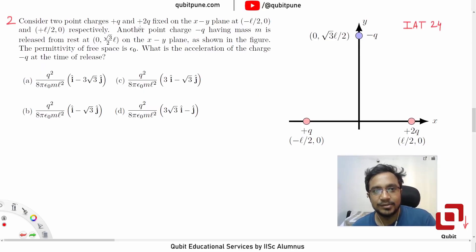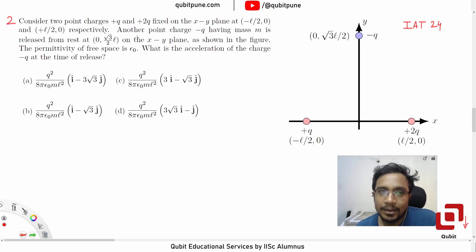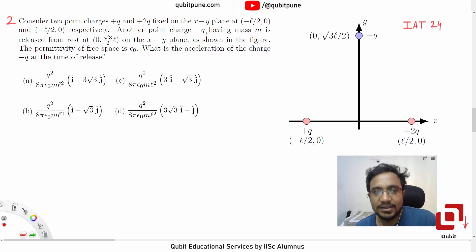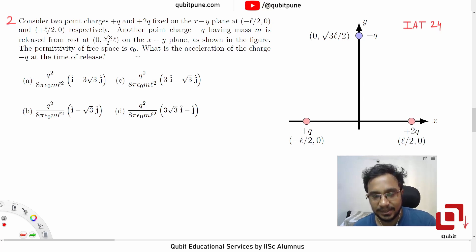Consider two point charges +q and +2q fixed on the x-plane at (-l/2, 0) and (+l/2, 0) respectively. Another point charge -q having mass m is released from rest at (0, √3·l/2) on the x-plane, as shown in the figure. The permittivity of free space is ε₀. What is the acceleration of the charge -q at the time of release?